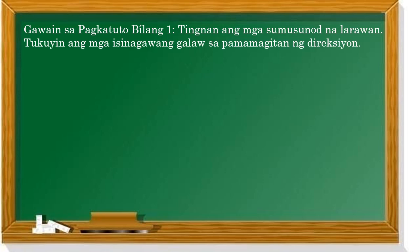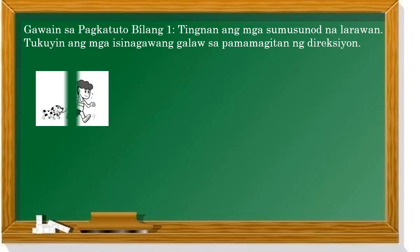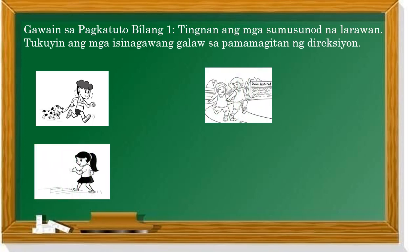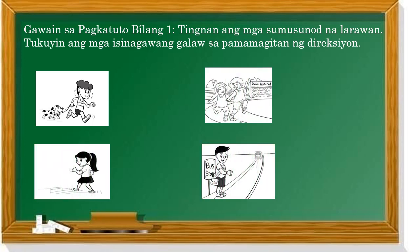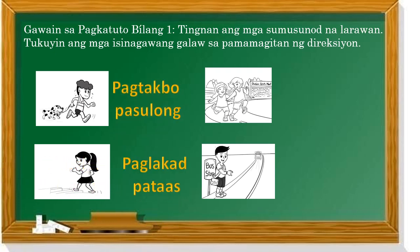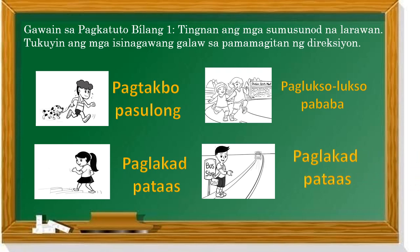Gawain sa pagkatuto bilang isa: tingnan ang mga sumusunod na larawan at tukuyin ang mga sinasagawang galaw sa pamamagitan ng direksyon. Sa una ay pagtakbo pasulong. Pangalawa, paglakad ng pataas o paakyat. Dito naman, paglokso-lokso pababa. At paglakad pataas.